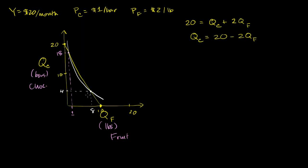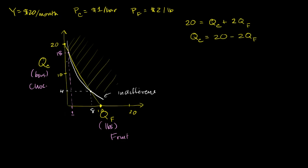Am I maximizing my total utility at either of those points? We've already seen that anything to the top right of our indifference curve — let me label this as our indifference curve — is preferable; we're going to get more total utility. So all of these other points on our budget line, even a few points below our budget line where we would actually save money, are preferable. So either of these points are not going to maximize our total utility.